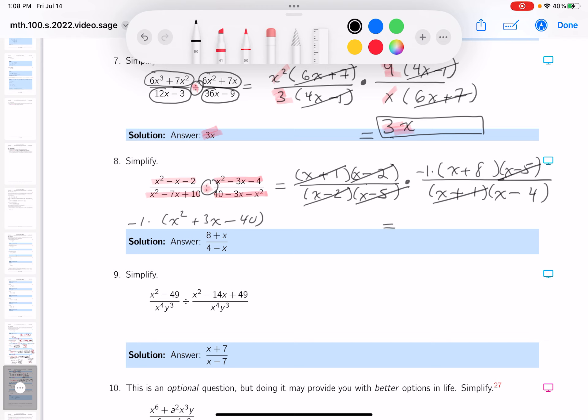I'll write this down for you. I'm left with -1 times (x+8) over (x-4). I'm going to write it a little bit different because it looks too strange to me. I'm going to put the -1 at the bottom.